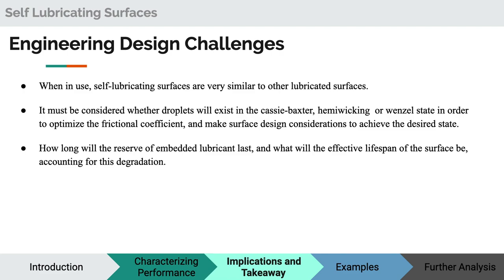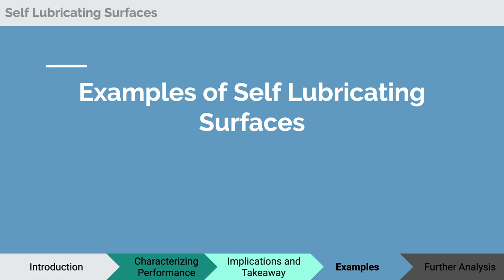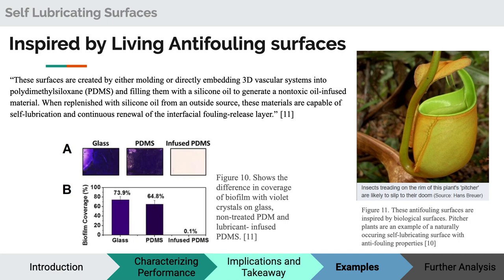What are the challenges we face during manufacturing and using these surfaces? The first challenge is design: how to design and make the droplet exist in the correct state — Cassie-Baxter, Hemi-Wicking, or Wenzel — in order to optimize frictional coefficient and reduce drag. The other challenge is lubricant longevity: how long can the lubricant last and what is the effective lifespan of the surface, since some lubricants are degradable. Now we can talk about three fascinating examples of self-lubricating surfaces. The first is inspired by a living anti-fouling surface — the pitcher plant. It has a waxy interior that it uses to trap insects. Inspired by this, researchers created a 3D vascular system of PDMS filled with silicone oil. The infused PDMS shows really low biofilm coverage compared to plain PDMS and glass samples.